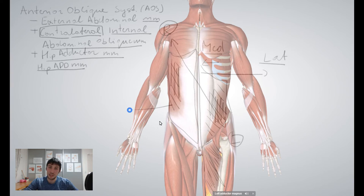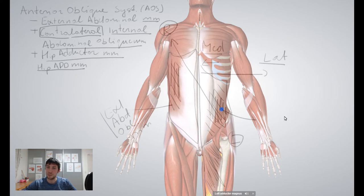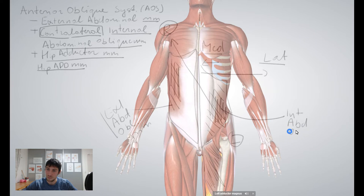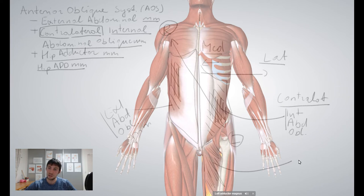So to summarize: external abdominal oblique, internal abdominal oblique on the other side — contralateral — and contralateral hip adductors.